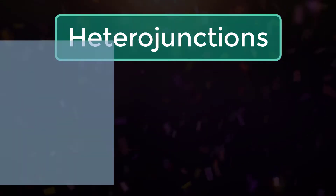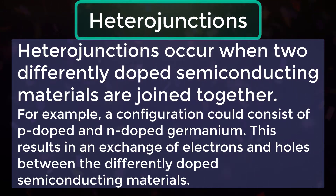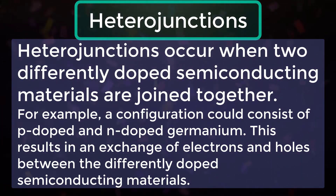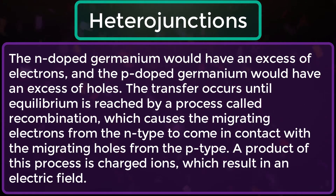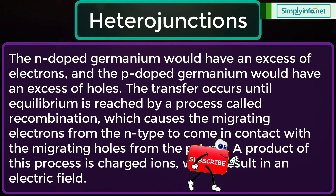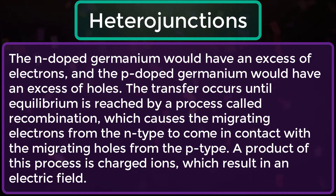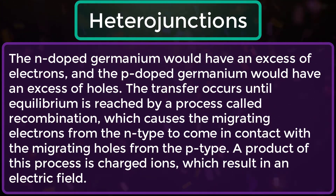Heterojunctions occur when two differently doped semiconducting materials are joined together. For example, a configuration could consist of p-doped and n-doped germanium. This results in an exchange of electrons and holes between the differently doped semiconducting materials. The n-doped germanium would have an excess of electrons and the p-doped germanium would have an excess of holes. The transfer occurs until equilibrium is reached by the process called recombination, which causes the migrating electrons from the n-type to come in contact with the migrating holes from the p-type.